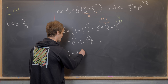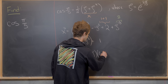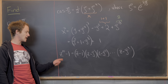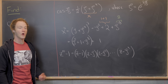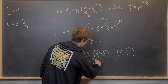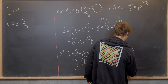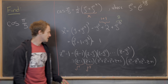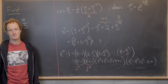We know z¹⁰ - 1 factors as (z - 1)(z - ζ)(z - ζ²)···(z - ζ⁹). Over the real numbers, it factors as (z - 1)(z + 1)(z⁴ + z³ + z² + z + 1)(z⁴ - z³ + z² - z + 1). You can foil that all out and verify you recover z¹⁰ - 1.